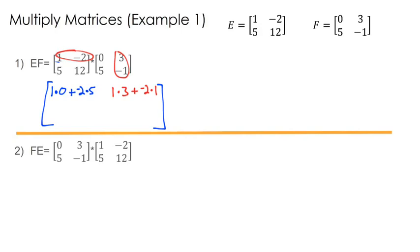Now let's do this next part. I'm going to erase up here. We're going to do this row times this column. So we have 5 times 0, first element times first element, plus 12 times 5.